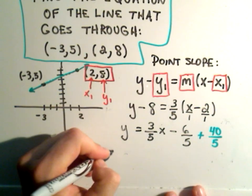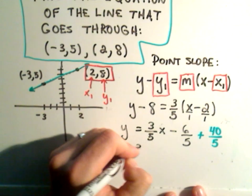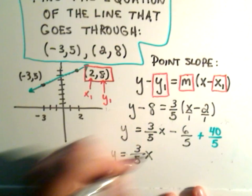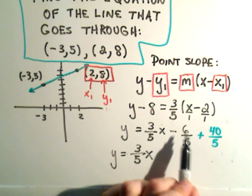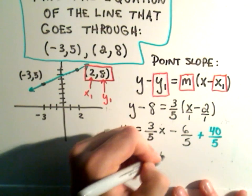And once I combine those together, so I have y equals 3 fifths x. Once I combine them, I'll be done. So again, the arithmetic happens on the top. Negative 6 plus 40, that is what? Positive 34 over 5.